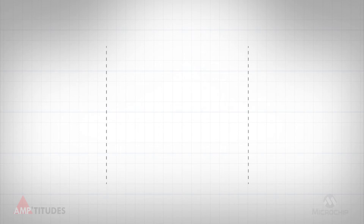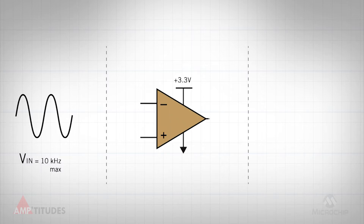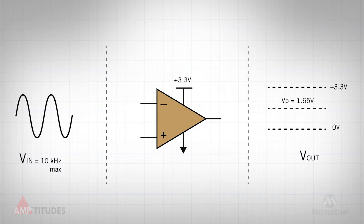Let's take a look at an example. Assume that for a given application, the input signal has a maximum frequency of 10 kHz. The amplifier is running off of a 3.3 volt rail, and the output can swing rail to rail, so the peak voltage at the output of the amplifier is 1.65 volts.